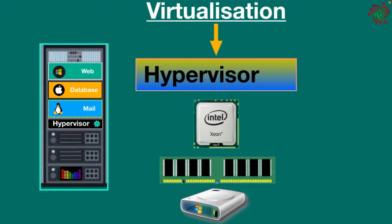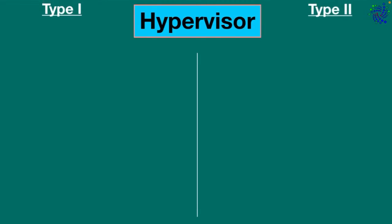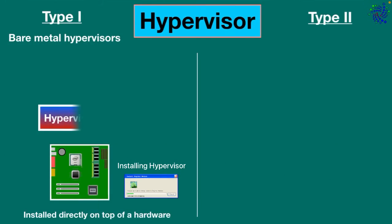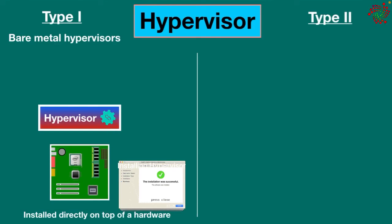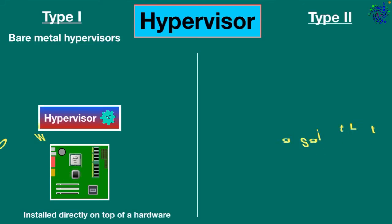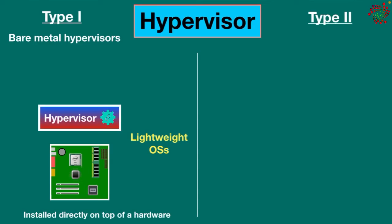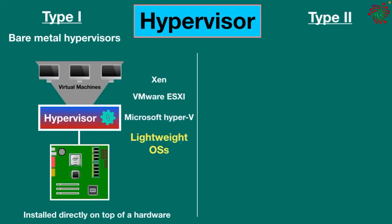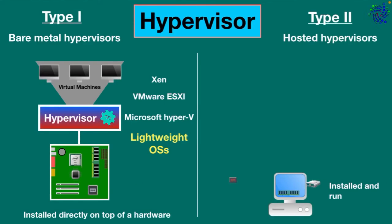There are two types of hypervisors: Type 1 and Type 2. Type 1, also known as bare-metal hypervisors, are installed directly on top of a physical computer's hardware, which means there is no existing operating system on the computer. Bare-metal hypervisors act as a lightweight operating system and are mainly used in virtual servers — they control hardware and virtual machines. Examples of Type 1 include VMware ESXi, Microsoft Hyper-V, and KVM.